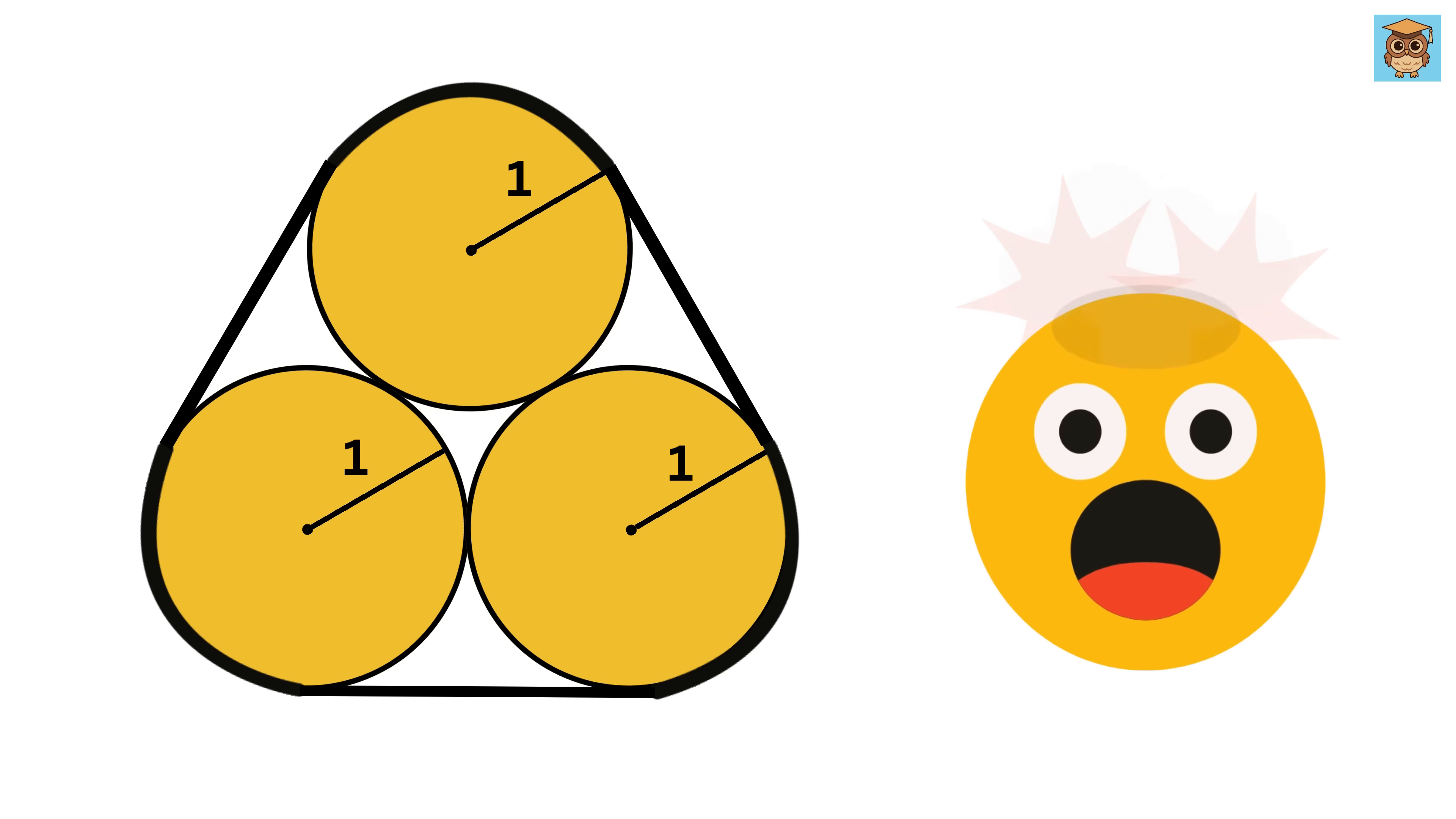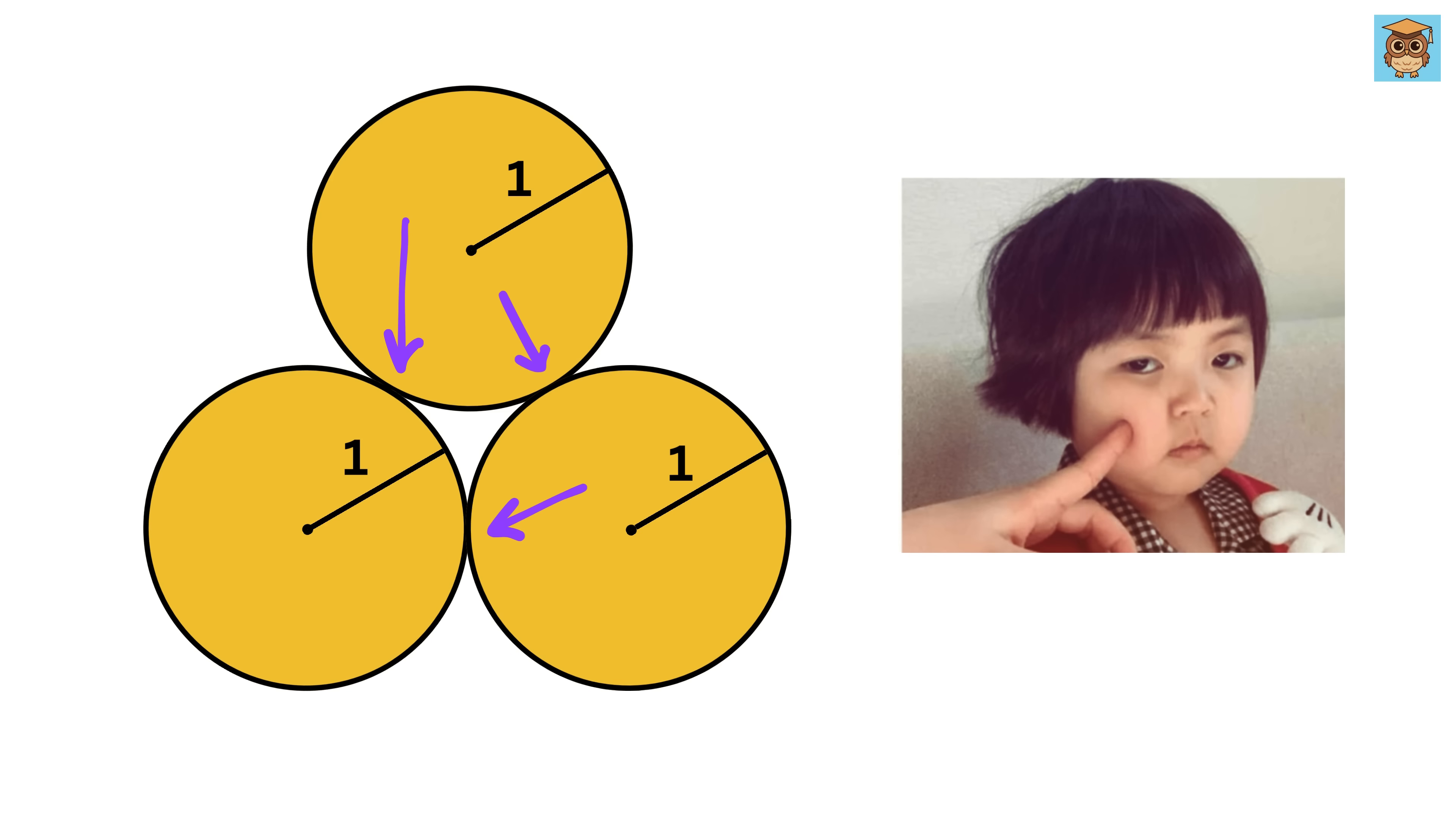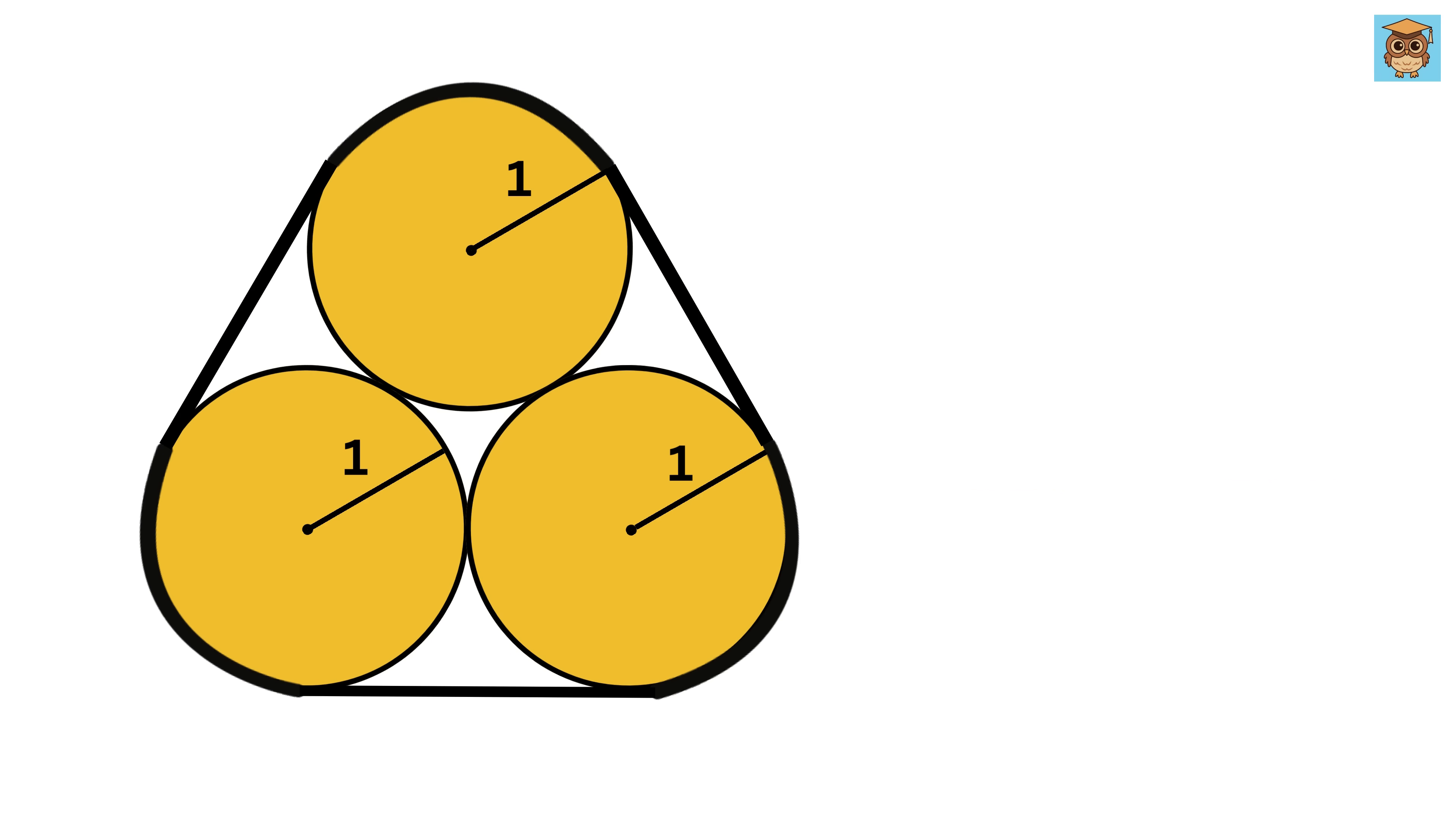This problem will blow away your mind. We have three identical circles of radius one unit which are touching each other externally like this. Then there is an elastic band around these circles like this. Our job is to find the length of this band.